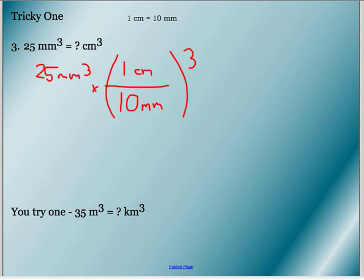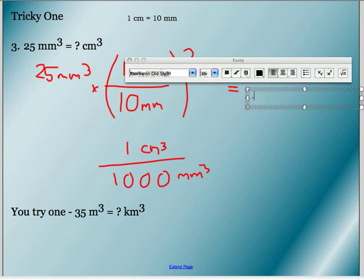So what you do is you cube everything inside here. So one cubed is one, centimeter cubed is centimeter cubed. 10 cubed is a thousand, and millimeters cubed is millimeters cubed. So what that does is it gives you a conversion factor that's mathematically correct, it's mathematically sound, and it actually cancels what you need. So if you do your math, 25 times one divided by a thousand, you should get 0.025 centimeters cubed as your answer.